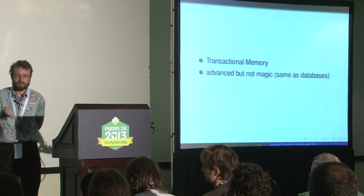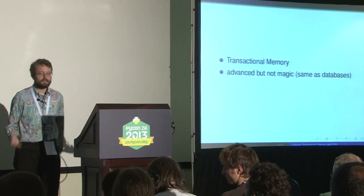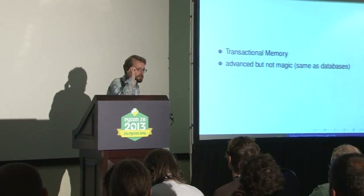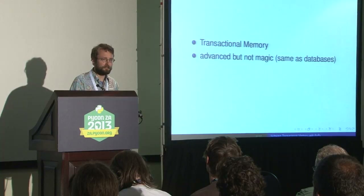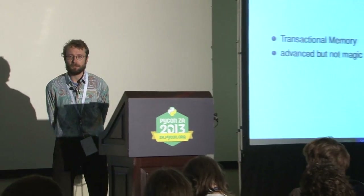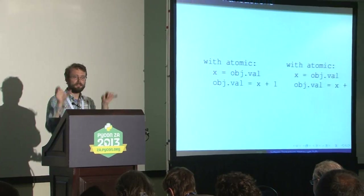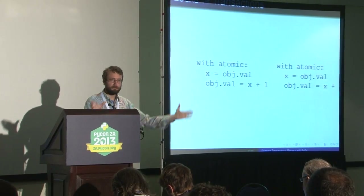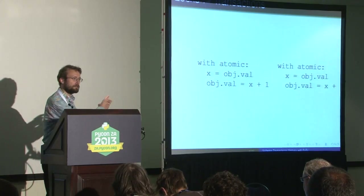The whole point of this talk is to say: we can have an implementation of Python that allows you to write 'with atomic' and allows these to run actually in parallel, using the same mechanism as database transactions. This is something that exists since the 90s, but serious academic research started in the early 2000s. Now there are quite a lot of papers about transactional memory — software transactional memory, hardware transactional memory, and various subdivisions.